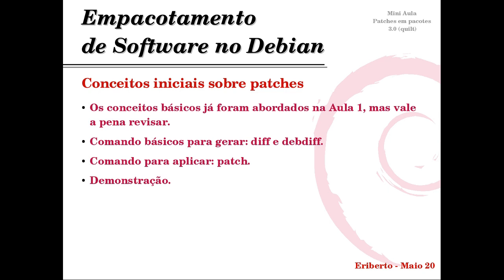O que é um patch? Um patch é feito geralmente com o comando diff para mostrar qual é a diferença entre um código fonte original e um código fonte que foi modificado. Isso é usado geralmente em código fonte de software, mas tem gente que usa isso para outras coisas, como textos de revistas eletrônicas, ou em sistemas de controle de versão tipo git, svn e outros. Esses sistemas, quando se altera um arquivo, não gravam o arquivo todo novamente — gravam um patch da diferença do anterior para o atual.